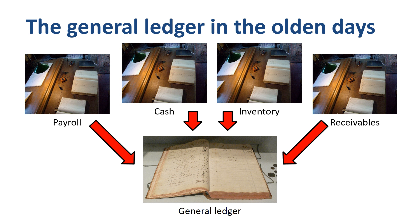As you can imagine, due to the manual nature of the process, this process is prone to errors like writing 51 instead of 15.